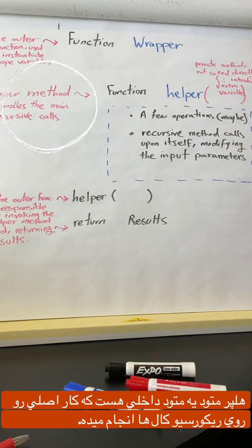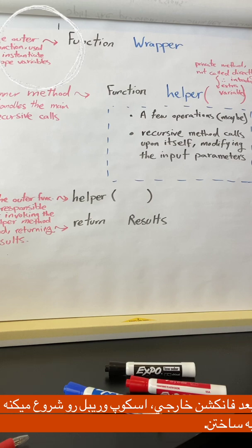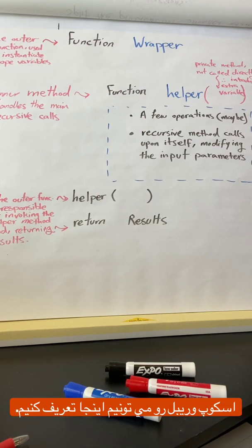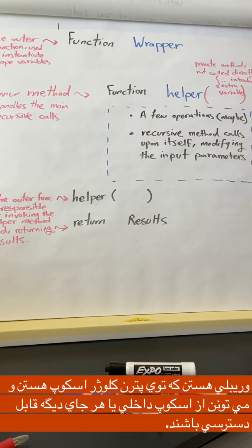The helper method is the inner method that handles the main recursive calls. Then the outer function is used to instantiate scope variables. These scope variables can be used anywhere in the algorithm. So now we understand the definition of scope variables better here. Scope variables are variables in the pattern closure scope that can be accessed in the nested child scopes, i.e. anywhere in the algorithm.